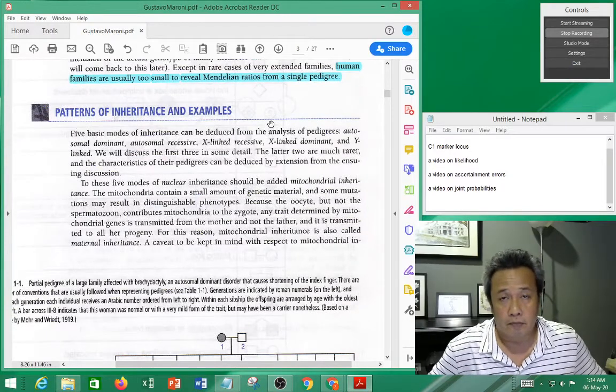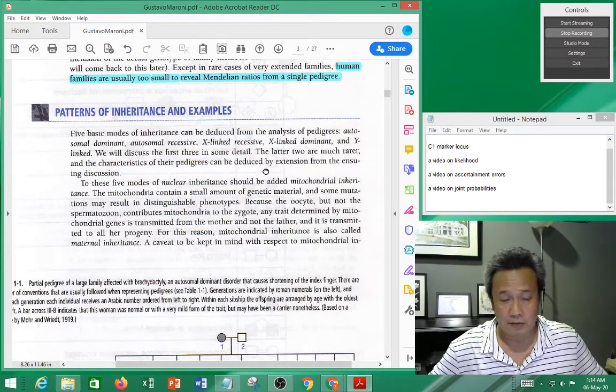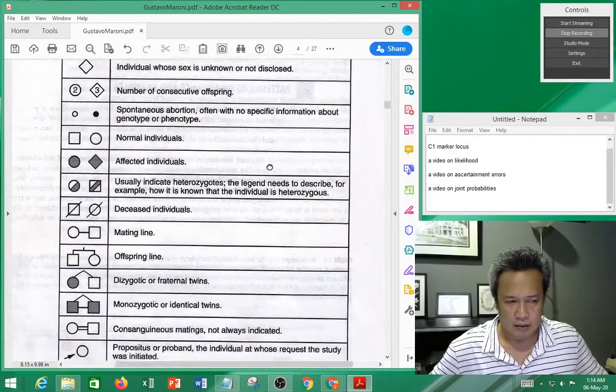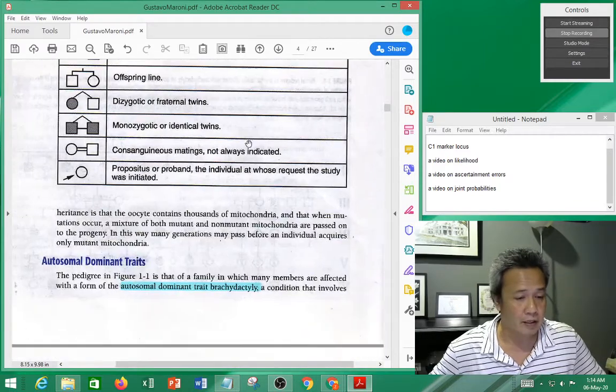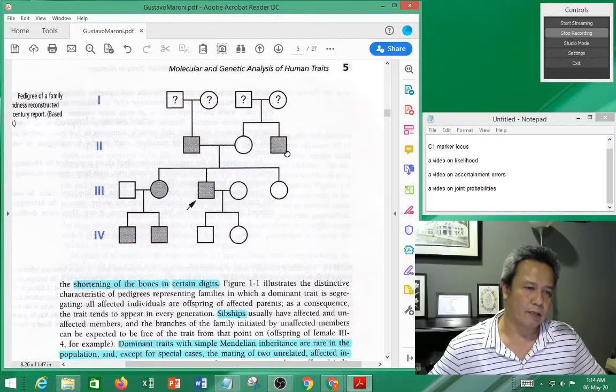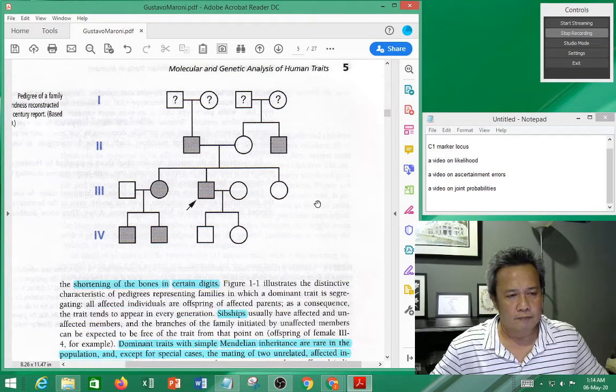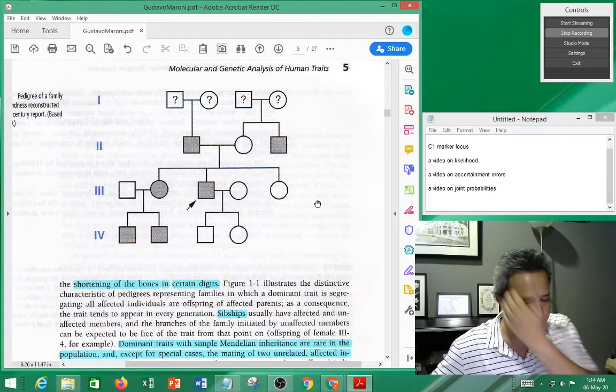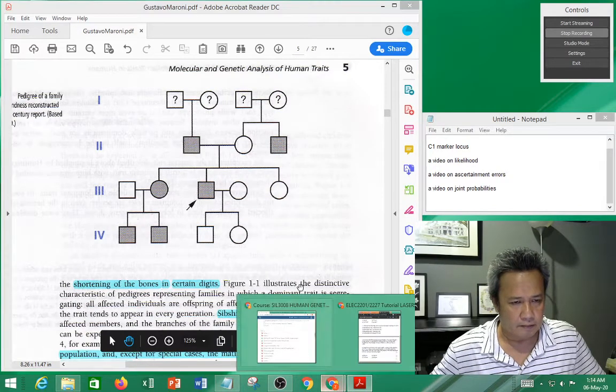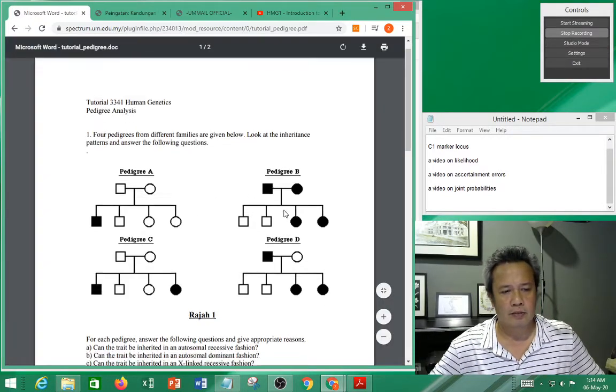This book goes on to talk about examples of different types of inheritance. It starts off with dominant. It gives you the symbols of the pedigree, and this is an example of dominant traits. I want to focus on this one for a while. I'm going to use this as an example to illustrate.